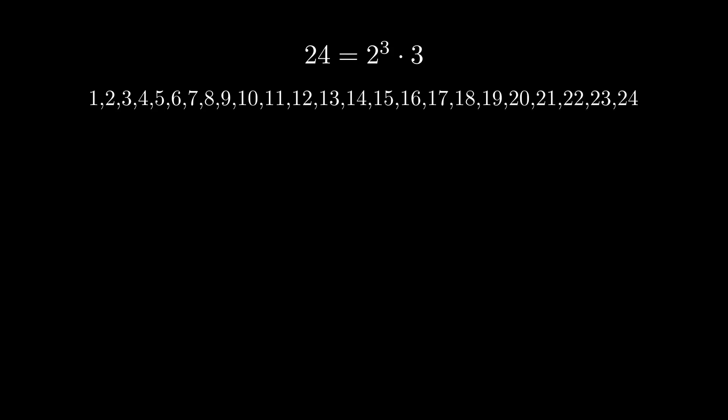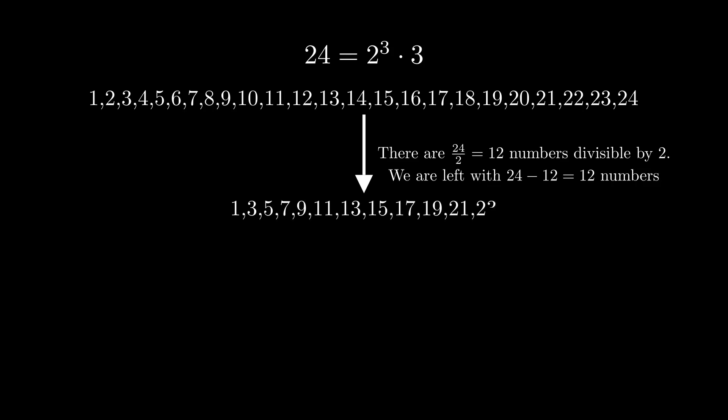For example, phi of 24 equals 8. Here's a systematic way to get phi of 24. Writing the prime factorization of 24, we know that the only prime numbers dividing 24 are 2 and 3. Now, up to 24, there are 24 numbers. Dividing 24 by 2 gives 12, and this is how many numbers up to 24 are divisible by 2. We subtract this from 24 to get 12. Dividing 12 by 3 gives 4, and subtracting 4 from 12 gives 8, the multitude of numbers up to 24 and prime to it.